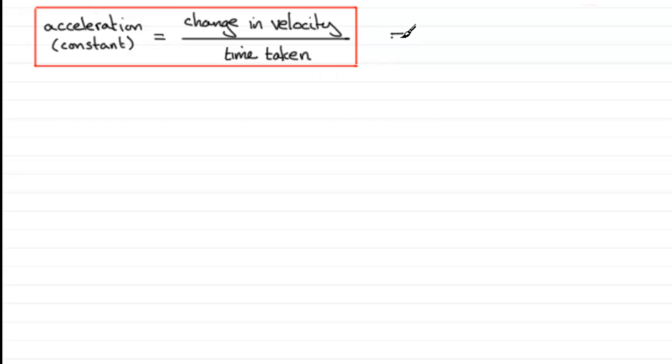What we've got here is essentially that this definition can be converted to say a for the acceleration as a vector equals the change in velocity—that's the final velocity which we'll call v minus the initial velocity which we'll call u—and it's all divided then by the time taken.